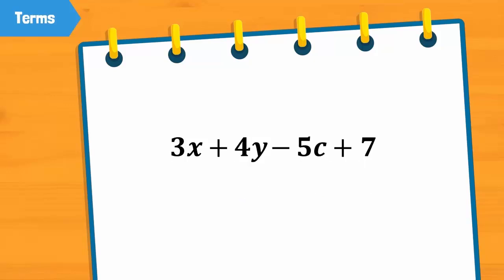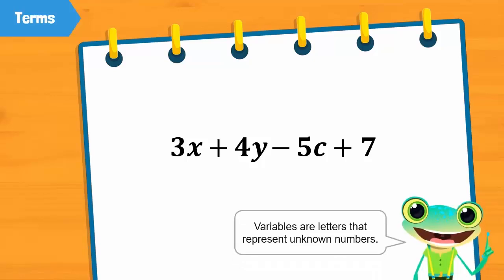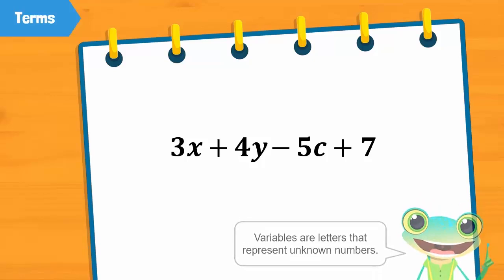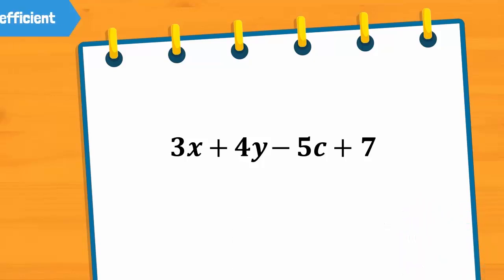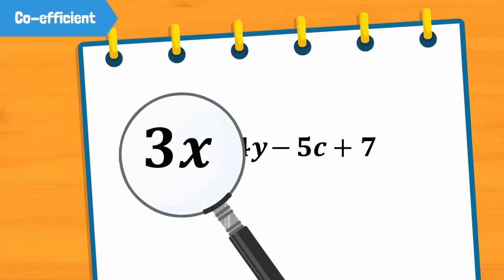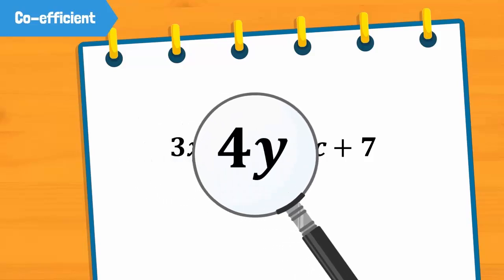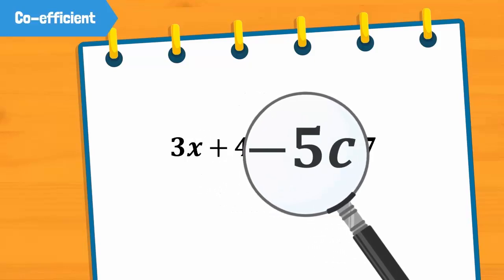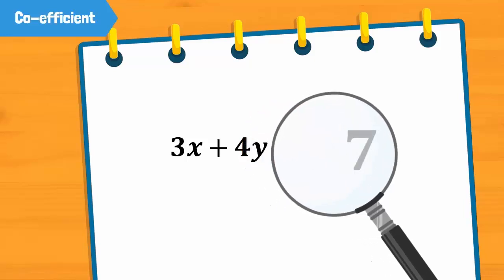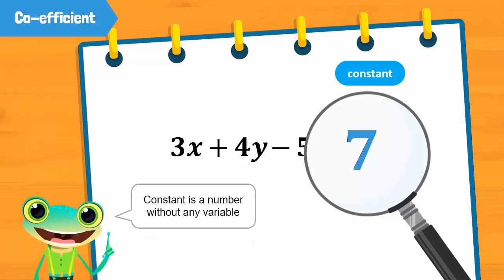In a term, the number appearing with a variable is called a coefficient. So in the term 3x, 3 is the coefficient. In the term 4y, 4 is the coefficient. In the term minus 5c, minus 5 is the coefficient. Whereas 7 is a constant.